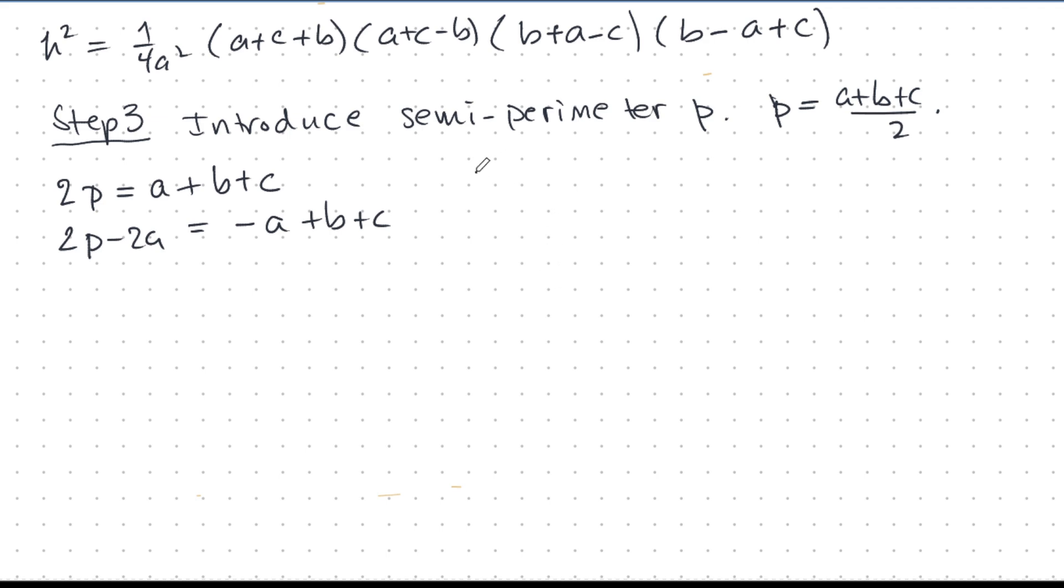And I'll end up with minus A plus B plus C. And if I keep going, 2P minus 2B, I get A minus B plus C and 2P minus 2C. This gives me likewise. But, we want all of this. These are all the same expressions here.